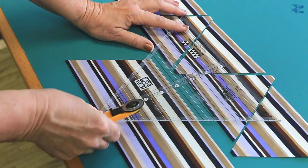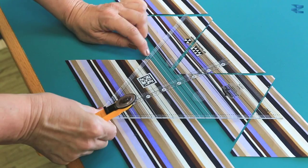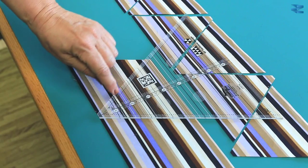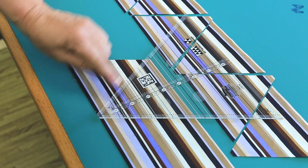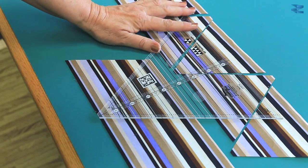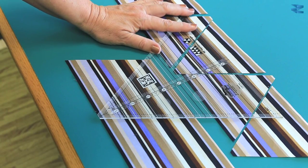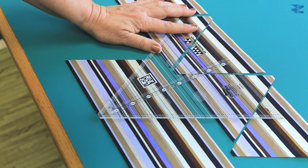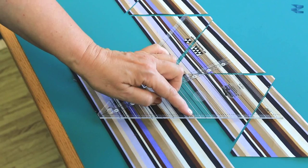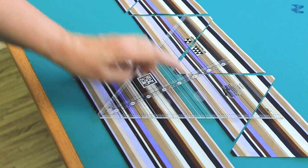And now I'm going to cut the diamond. So what we do is place the intersection point of the four and a half inch line and the seam line right on the very top corner and place the four and a half inch line across the top of the strip and then cut.